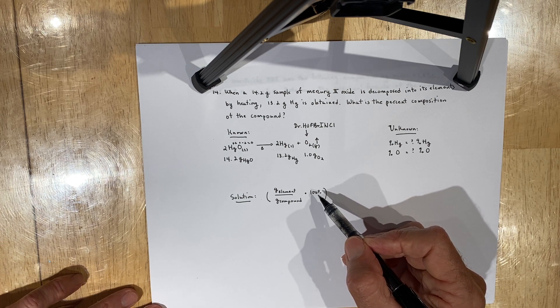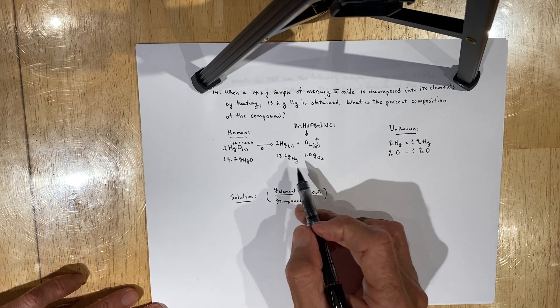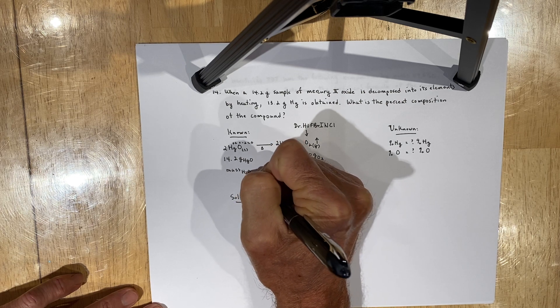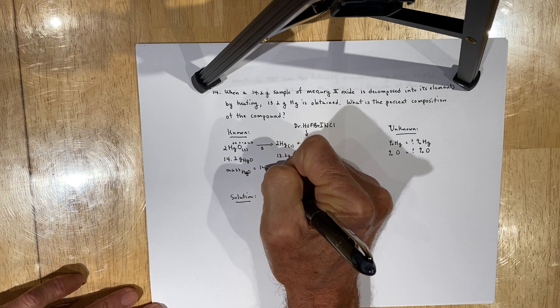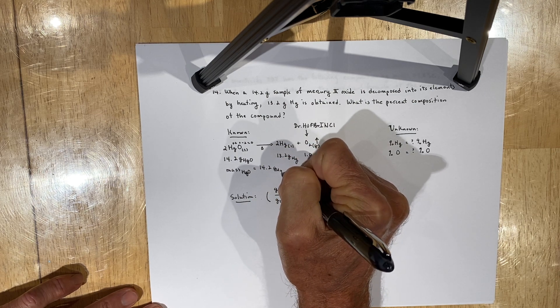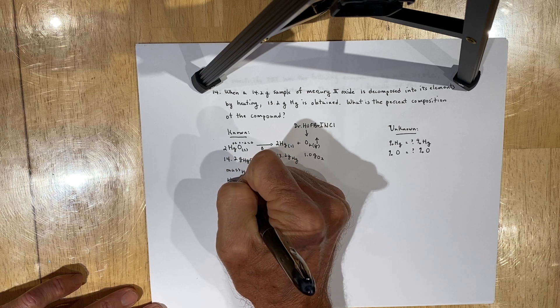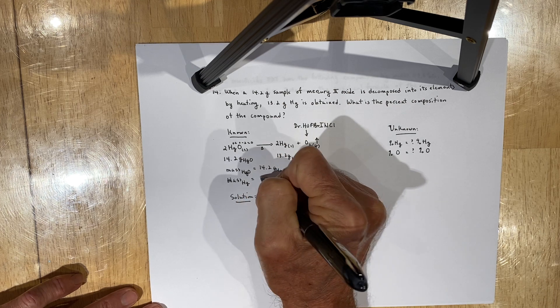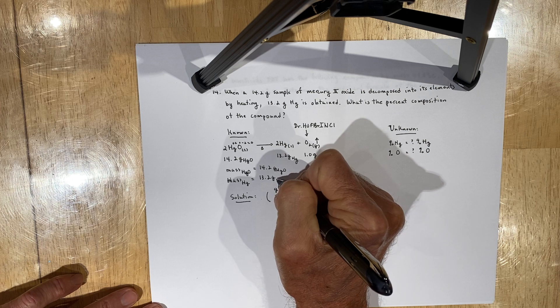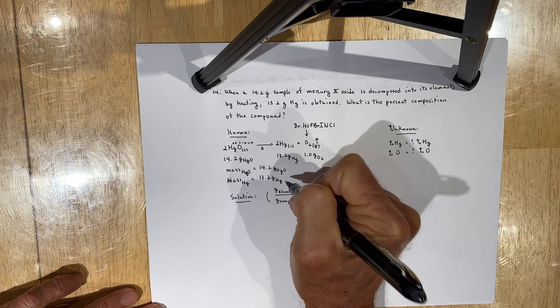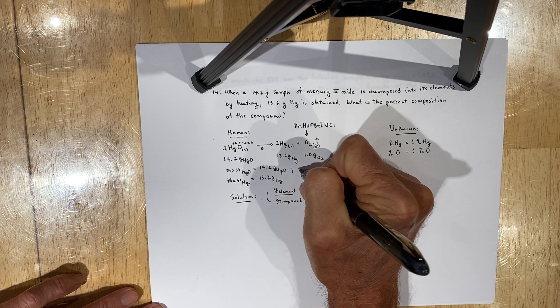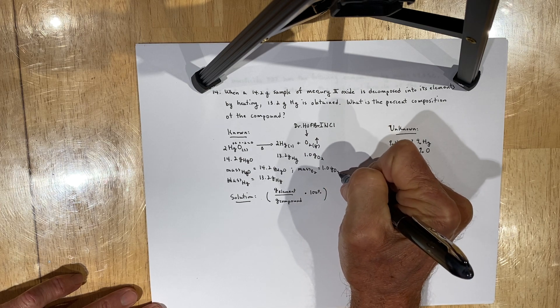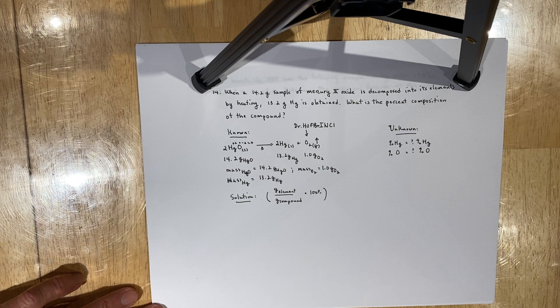And with that, I would like to re-record these values as I typically do by saying, I've been given the mass of mercury oxide, which is equal to 14.2 grams of mercury oxide. I've also been given the mass of mercury, elemental mercury, which is 13.2 grams of mercury. And likewise, I've been given the mass of oxygen, which is 1.0 grams of oxygen by default.